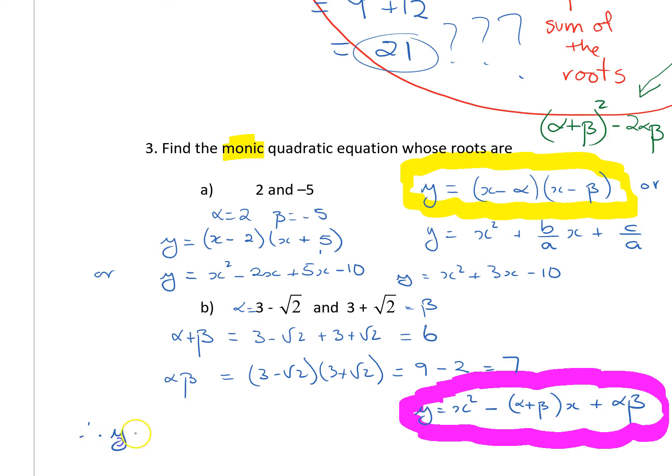Therefore, y is equal to x squared minus the sum minus 6x plus the product plus 7. So, we've got the equation.